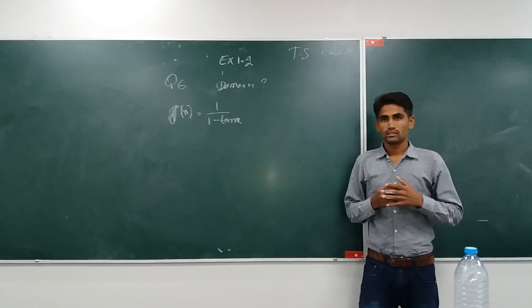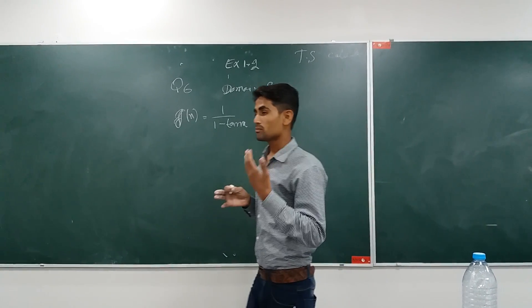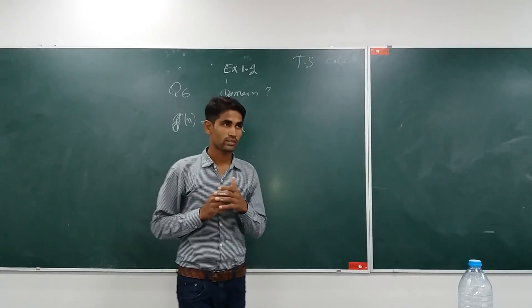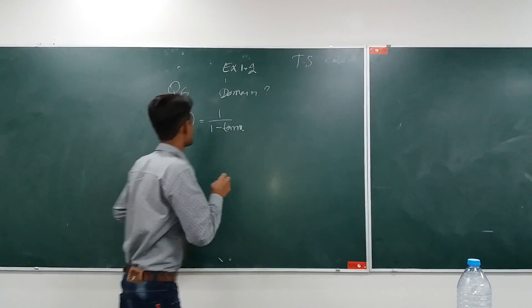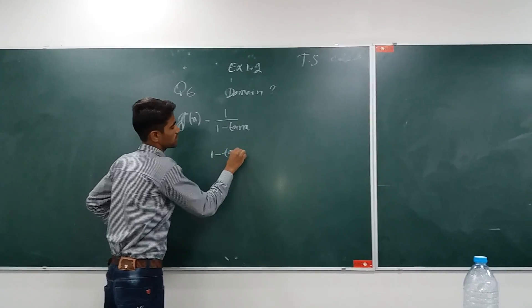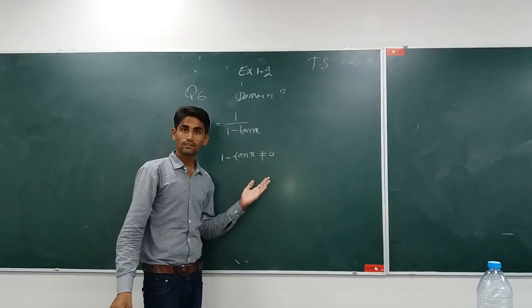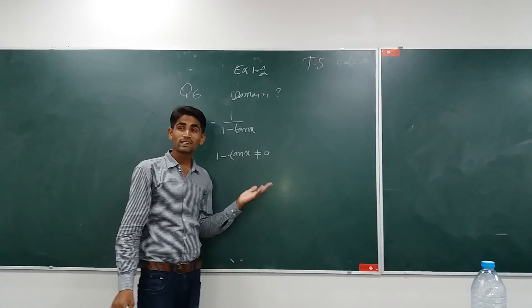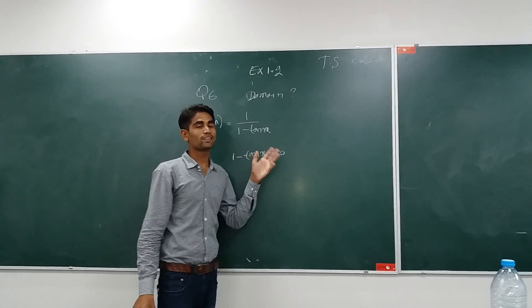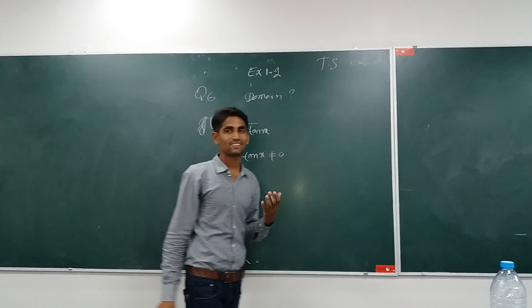You know that very well: for every rational function, the denominator must not be equal to 0. So, 1 minus tan x does not equal to 0, because it is the denominator. Due to this, I have written that 1 minus tan x does not equal to 0.